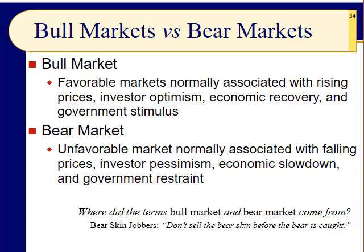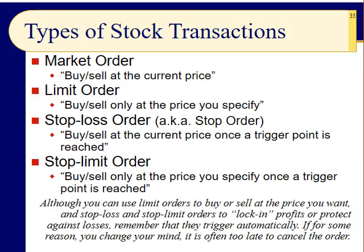Now let's take a look at the types of stock transactions. There are four major types, but the one I always use personally is the market order. The others — the limit order, the stop loss, and the stop limit — are a little tricky and subtle, but they allow you to target a specific price. However, with those other three, you're not guaranteed that you'll ever actually buy or sell the stock.